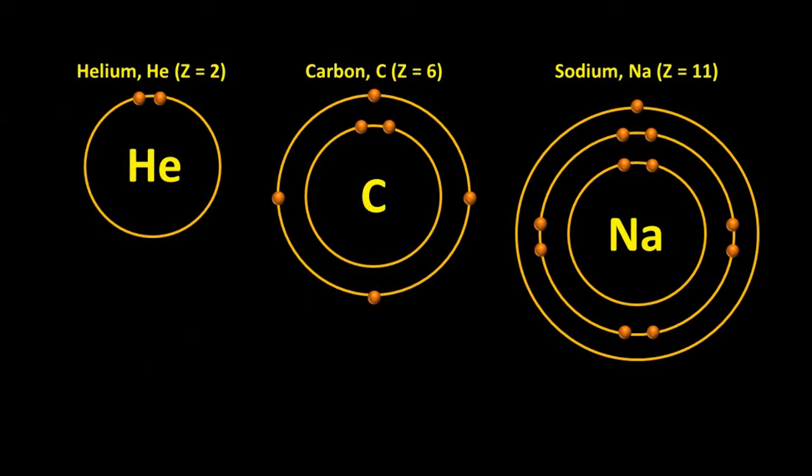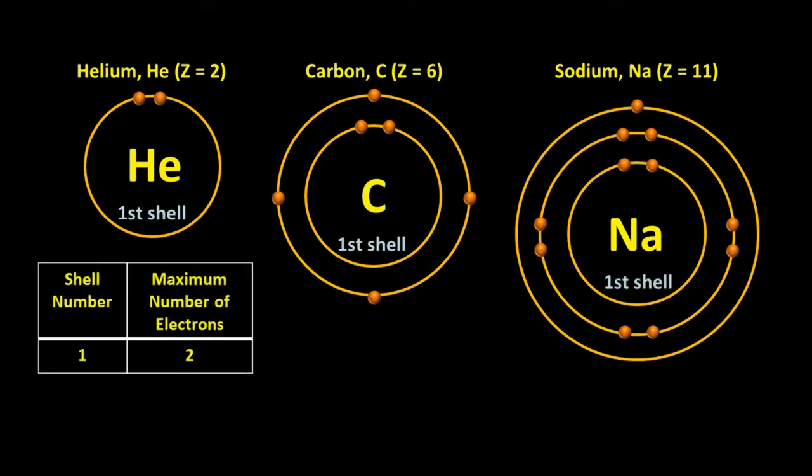The innermost electron shell of an atom is called the first shell. Since it is so small, it can hold a maximum of only two electrons. If any more tried to cram in, they would be repelled by the electrons that are already there.